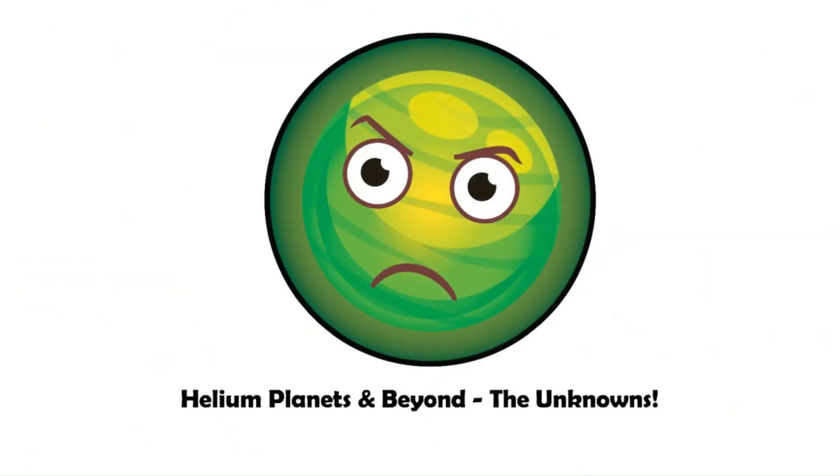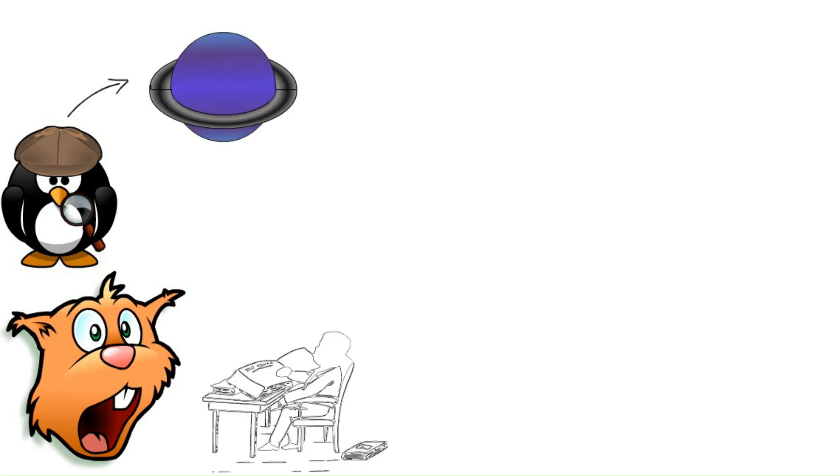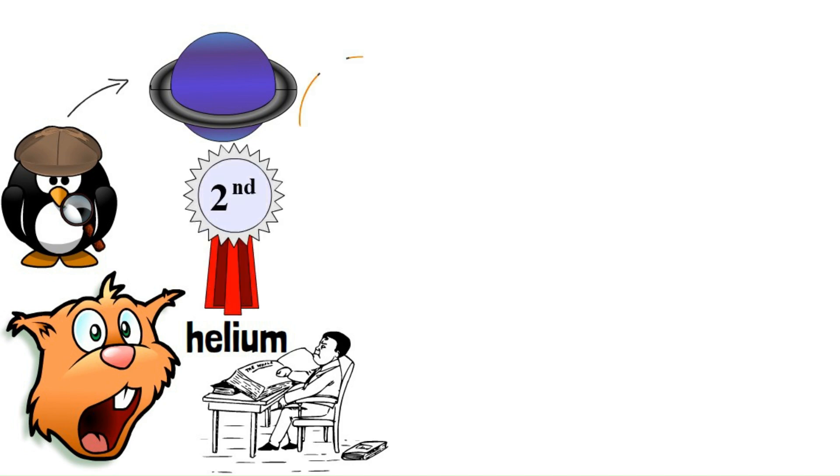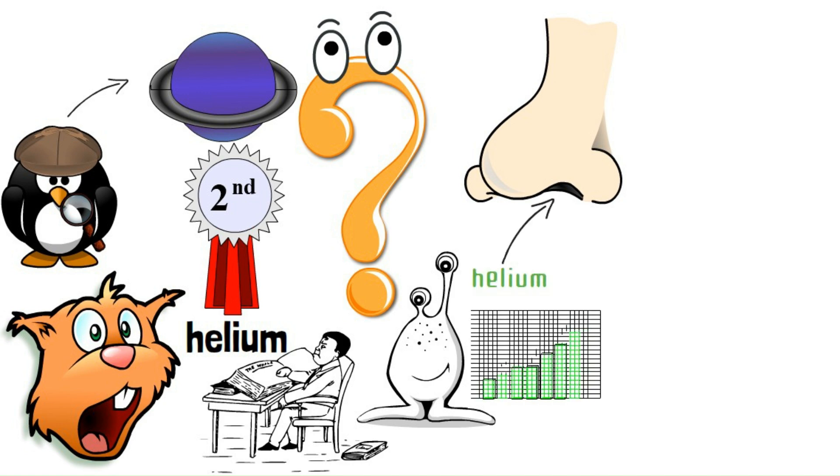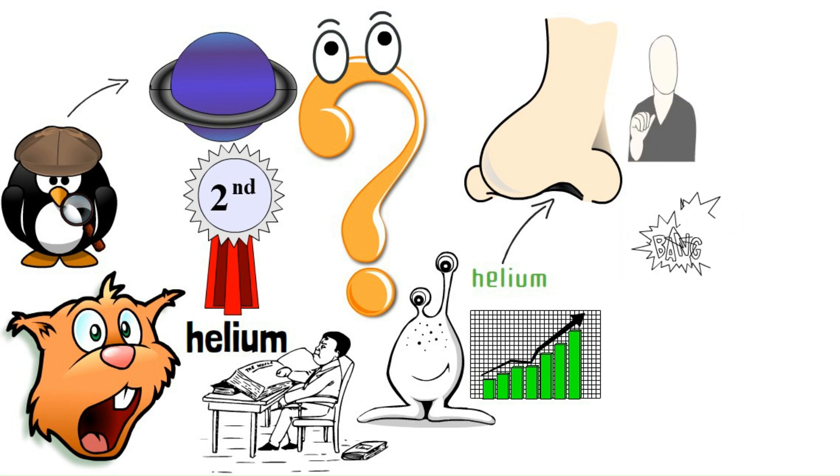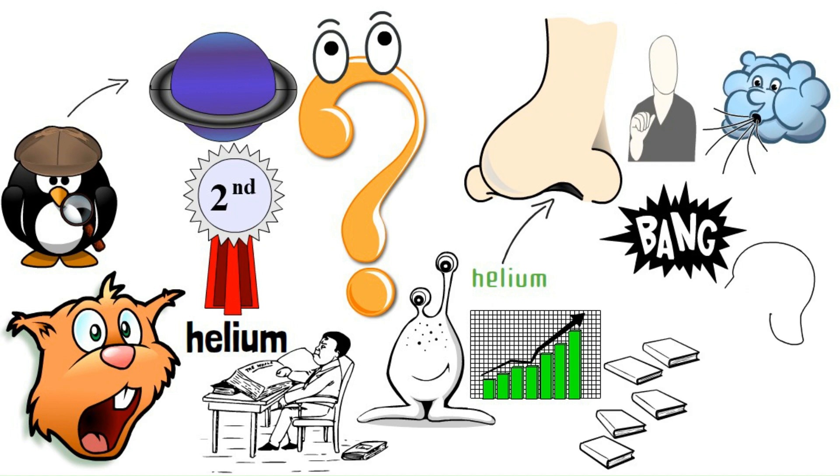Helium planets and beyond. The unknowns. The universe loves surprises, and astronomers are constantly discovering new types of planets. We have theoretical helium planets, composed mostly of helium, the second most abundant element in the universe. Their existence is yet to be confirmed, but they paint a picture of truly alien worlds. Imagine a planet where the air you breathe, if you could breathe on a helium planet, is lighter than air on Earth. Helium planets could form under very specific conditions, perhaps from the remnants of exploded stars, or the outer layers of giant planets ripped apart by powerful stellar winds. While their existence remains theoretical, the possibility of helium planets expands our understanding of the diverse building blocks that can form planets.